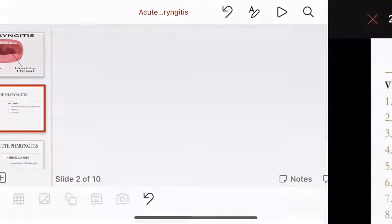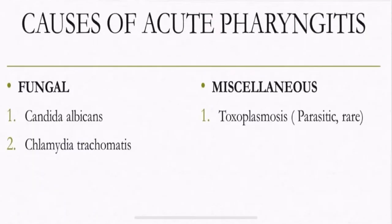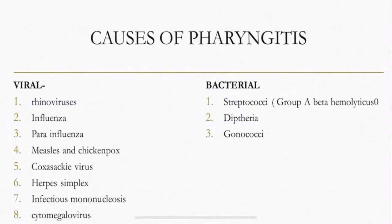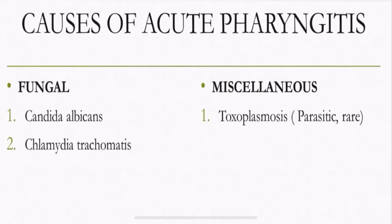Under fungal causes, it is Candida albicans and Chlamydia trachomatis. The miscellaneous causes are very rare — the parasitic one is toxoplasmosis, which is very rare in causing acute pharyngitis. In summary: most common are viral, then bacterial (with streptococci being the most important), then fungal, and rarely the parasitic toxoplasmosis.